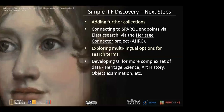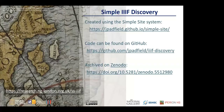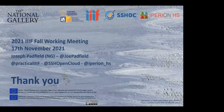Moving forward, the next steps include adding further collections, connecting SPARQL endpoints, using caching in Elasticsearch, making use of outputs from the Heritage Connector project, exploring multilingual search term options, and potentially developing the UI to handle complex datasets from heritage science, art history, or object examinations. The whole system is based on the Simple Site framework available on GitHub. The code for the simple IIIF discovery system has also been uploaded to GitHub and archived on Zenodo for referencing. Thank you very much.